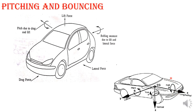Rolling causes the left-hand suspension system to move out of phase with the right-hand suspension system. The suspension design must therefore account for rolling, ensuring that it does not occur within a controllable speed range while the vehicle is turning.